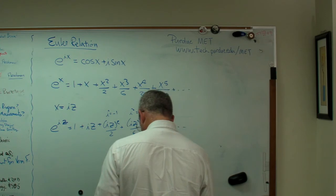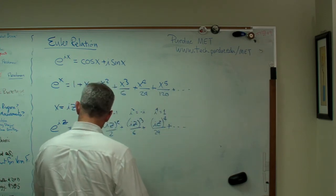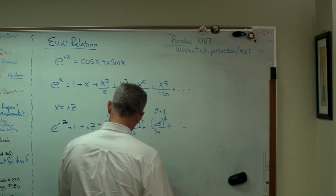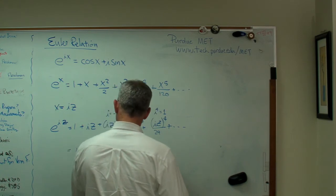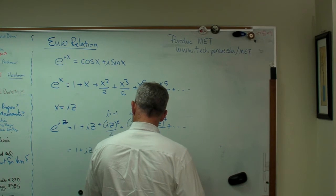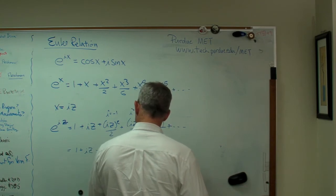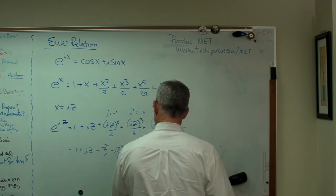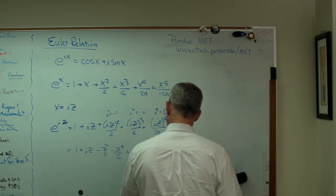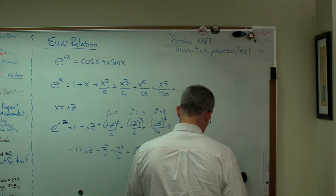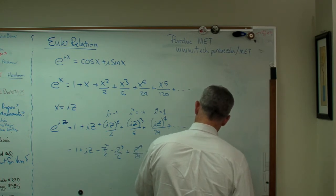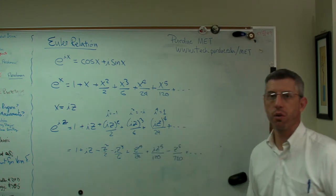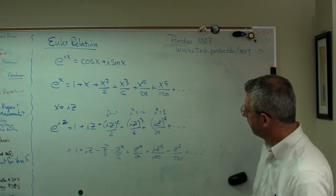So what you notice is when you work this out, you get, let's see, and again I'm going to use my cheat sheet here, 1 plus iz minus z squared over 2, minus iz cubed over 6, plus z to the 4th over 24, plus iz to the 5th over 120, minus z to the 6th over 720, plus blah blah blah. You can work this out for yourself. So what?